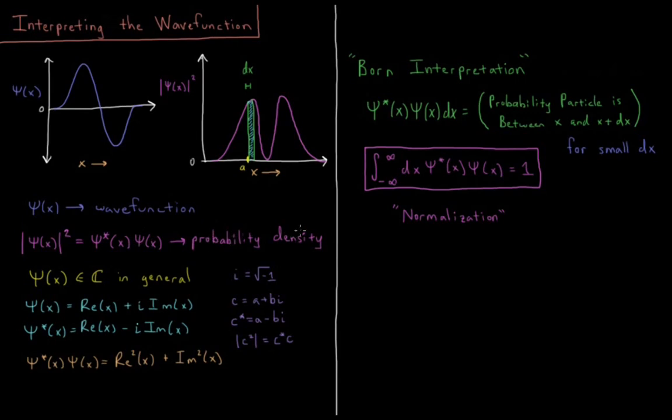So before we get into probability density, let's discuss this psi star psi part here. In general, the value of our wave function can be a complex number. So a complex number, if you remember real and imaginary numbers, has some real component A and some imaginary component B. And the imaginary component gets multiplied times I, which is the square root of minus one.